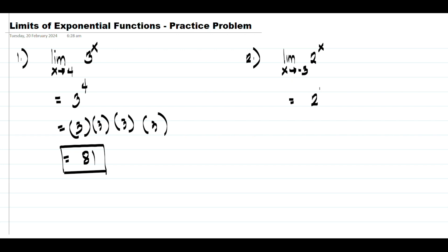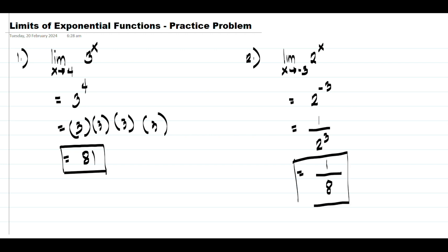Substituting gives us 2 raised to negative 3. To eliminate the negative exponent, we write this as 1 over 2 raised to 3, which is 1 over 8, and that will be our answer.